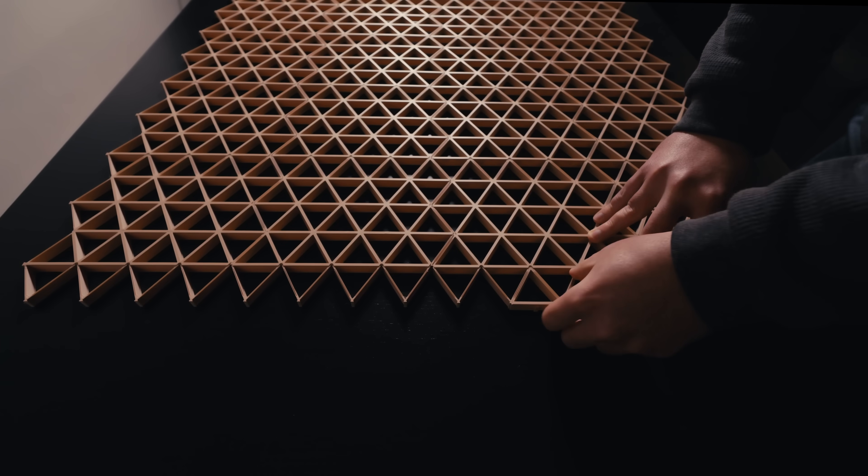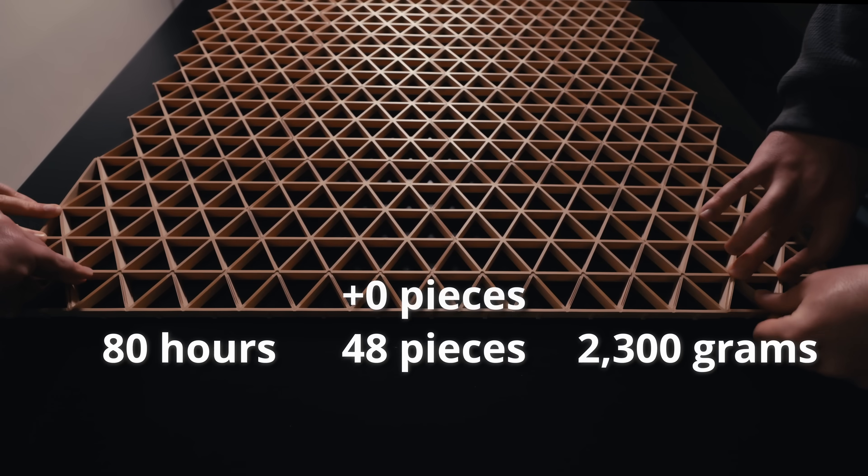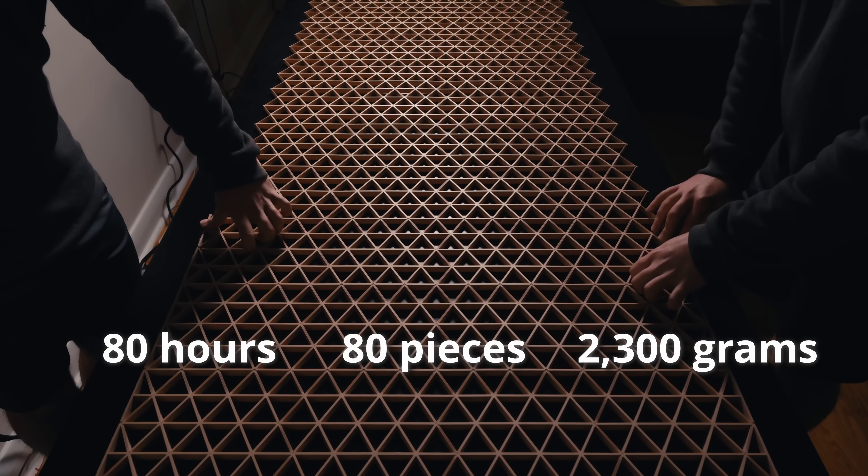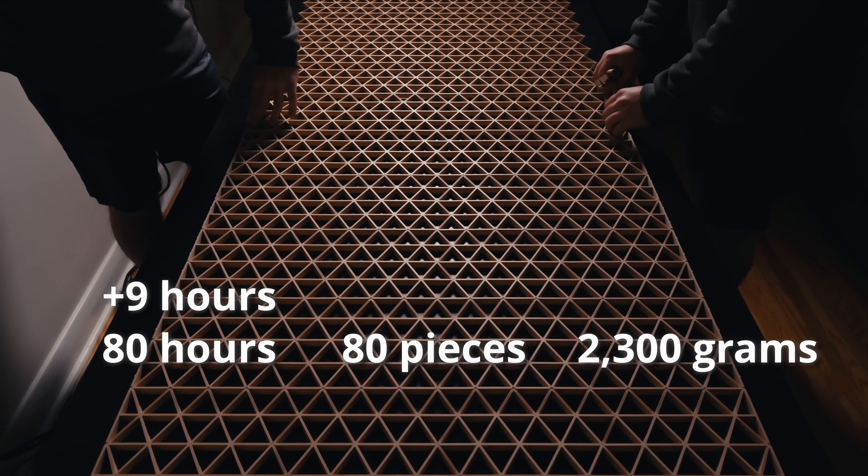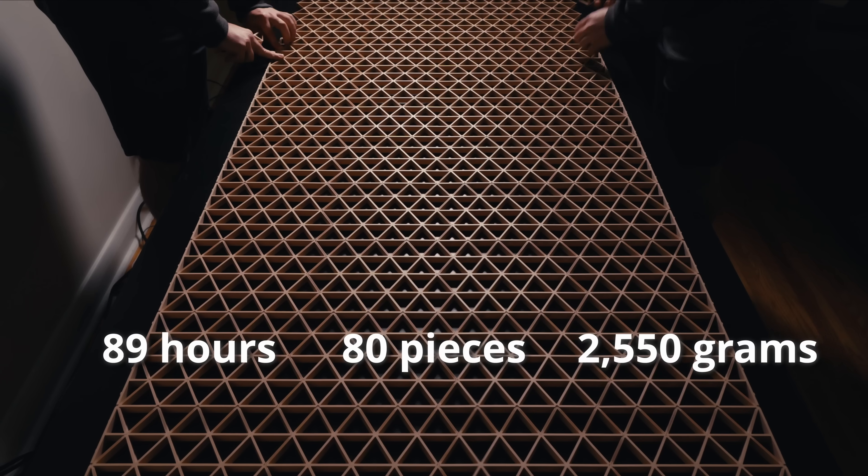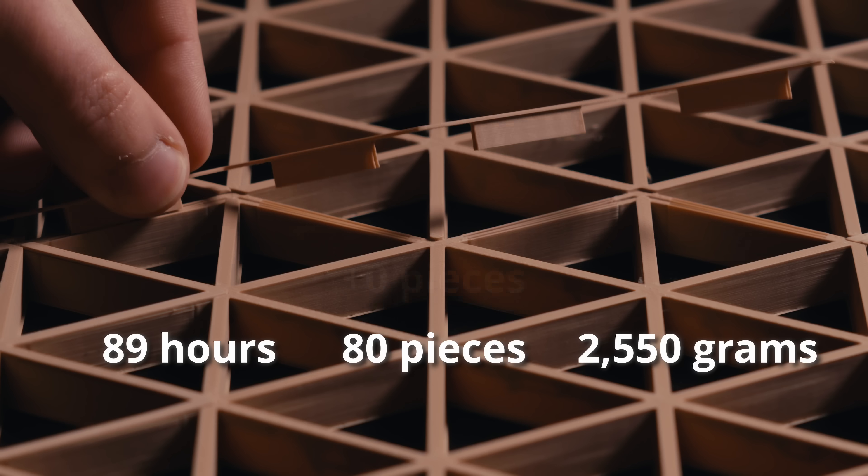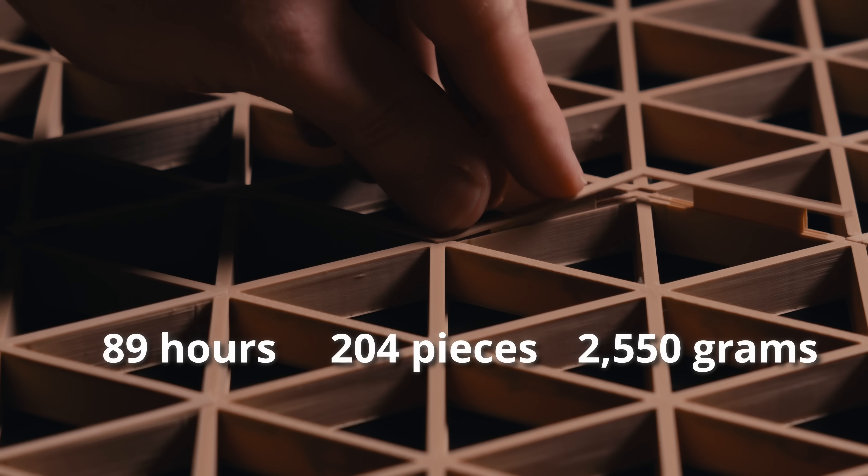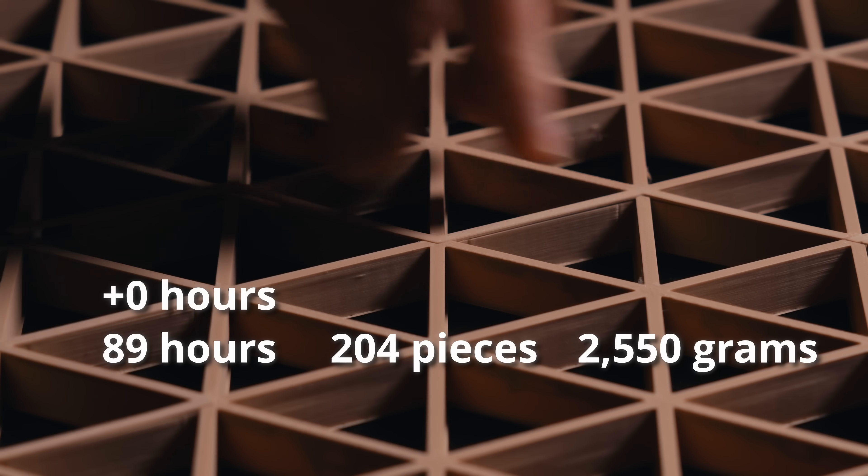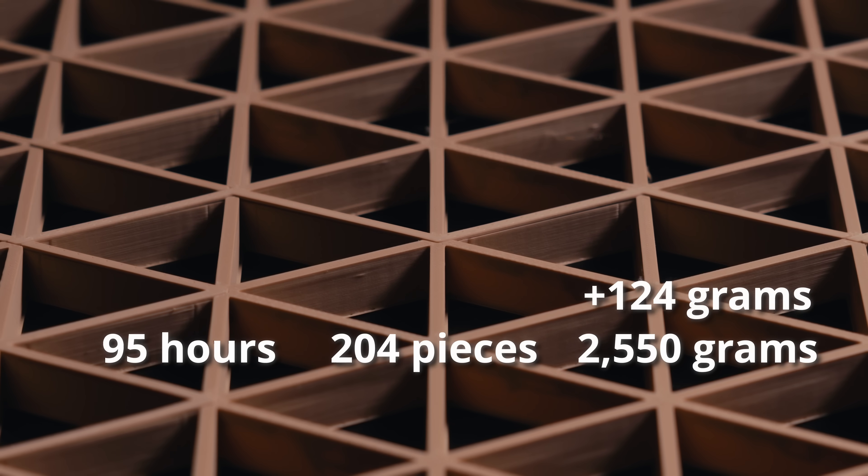Then to complete the inner frame and connect things vertically, I printed 32 inner border pieces, which took 9 hours and 250 grams of filament. To cover the seams, I used 124 copper plates, which only took a few hours to print and about 100 grams of filament.